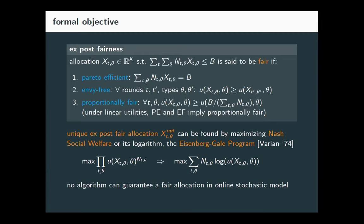The challenge is that in an online stochastic model we don't know what the demands are in advance, but we have to make sequential allocation decisions. It's easy to construct scenarios showing no algorithm can guarantee an ex post fair allocation online, because decisions are irrevocable, and uncertainty about whether fewer or more people arrive means you cannot guarantee all fairness conditions simultaneously. We need to ask: what's a reasonable relaxed notion of fairness for the online stochastic model?